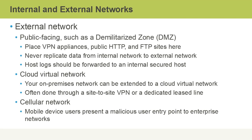Log forwarding should be configured to an internal secured host, and you can do that on Windows as well as Unix and Linux. Our on-premises network can also be extended to a cloud virtual network — it's kind of like having another network on-premises, except you access it through the internet. This is often done through a site-to-site VPN link between your on-premises network and your public cloud provider, or you might even have a dedicated lease line between your site and the cloud provider that doesn't go through the internet.